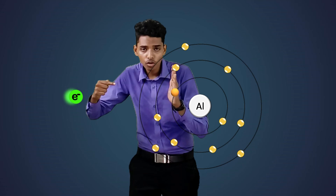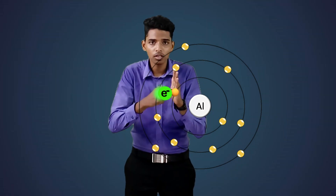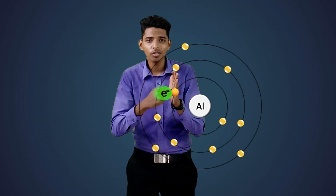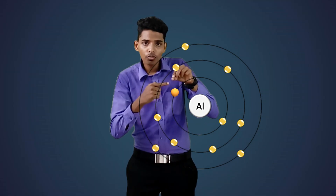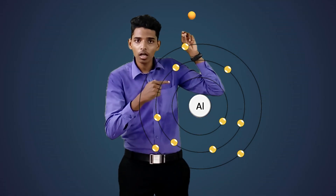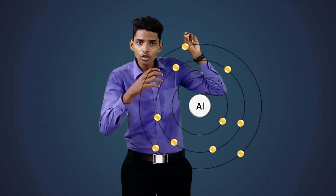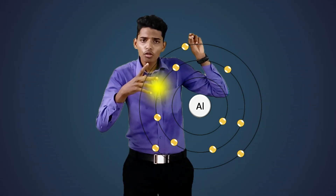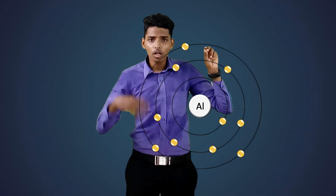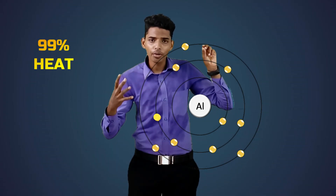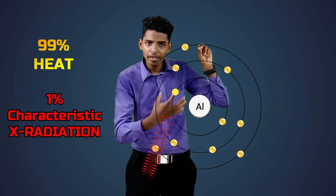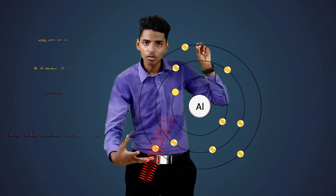Now let's come back to the core concept. When the kinetic energy of the electron is stopped by the electron present inside the atom of the anode, due to the law of conservation of energy, the electron inside the atom is ionized and an enormous amount of heat is produced — that is 99% heat is produced and only 1% of X-radiation is created.